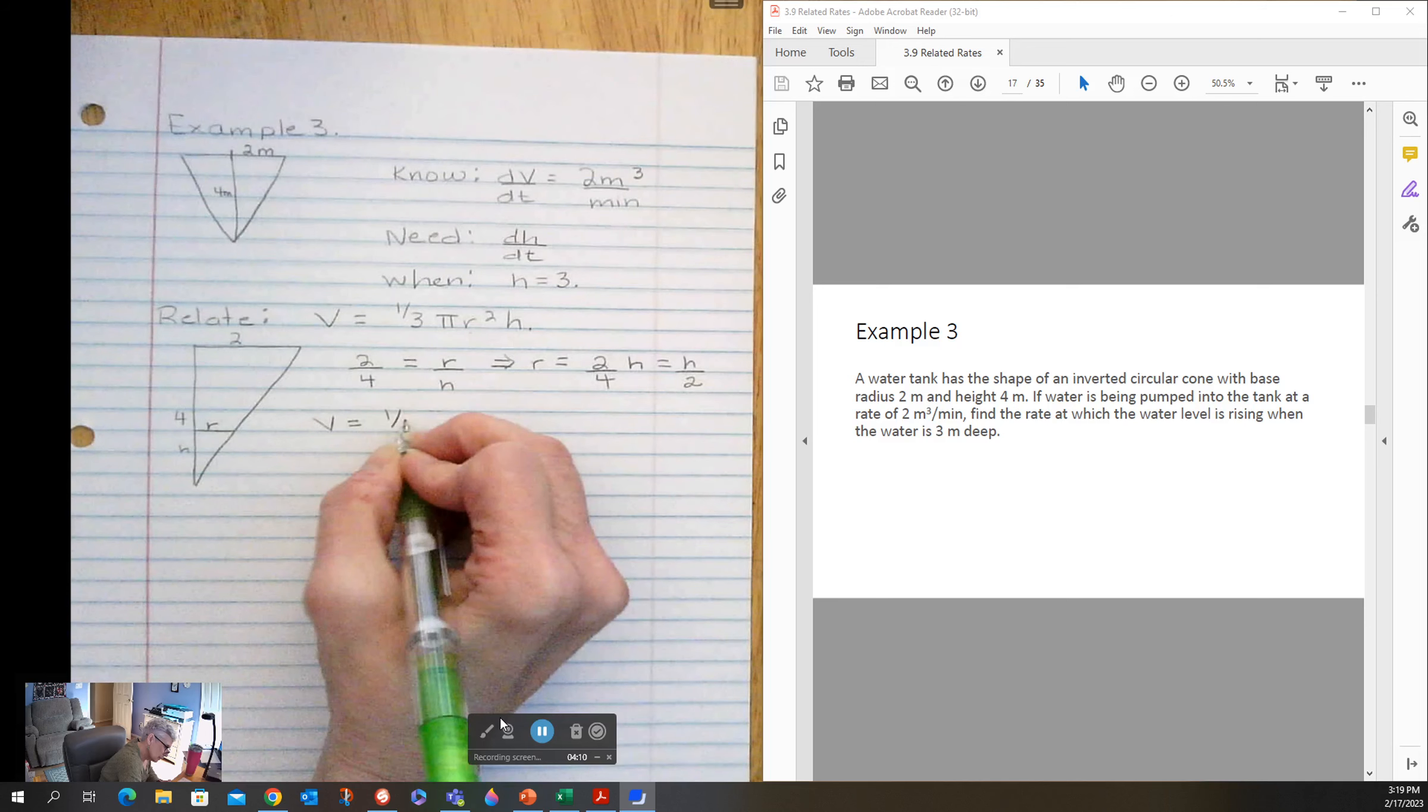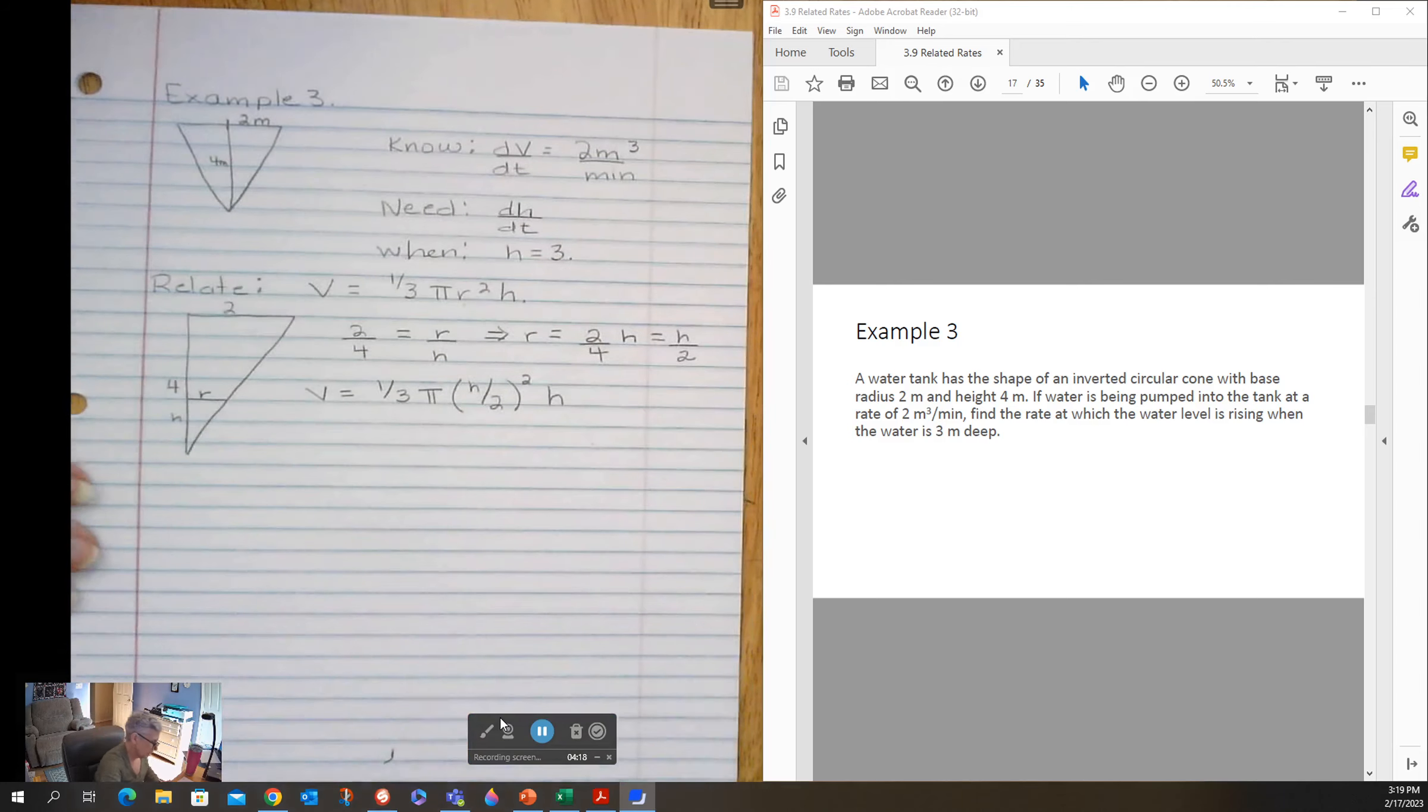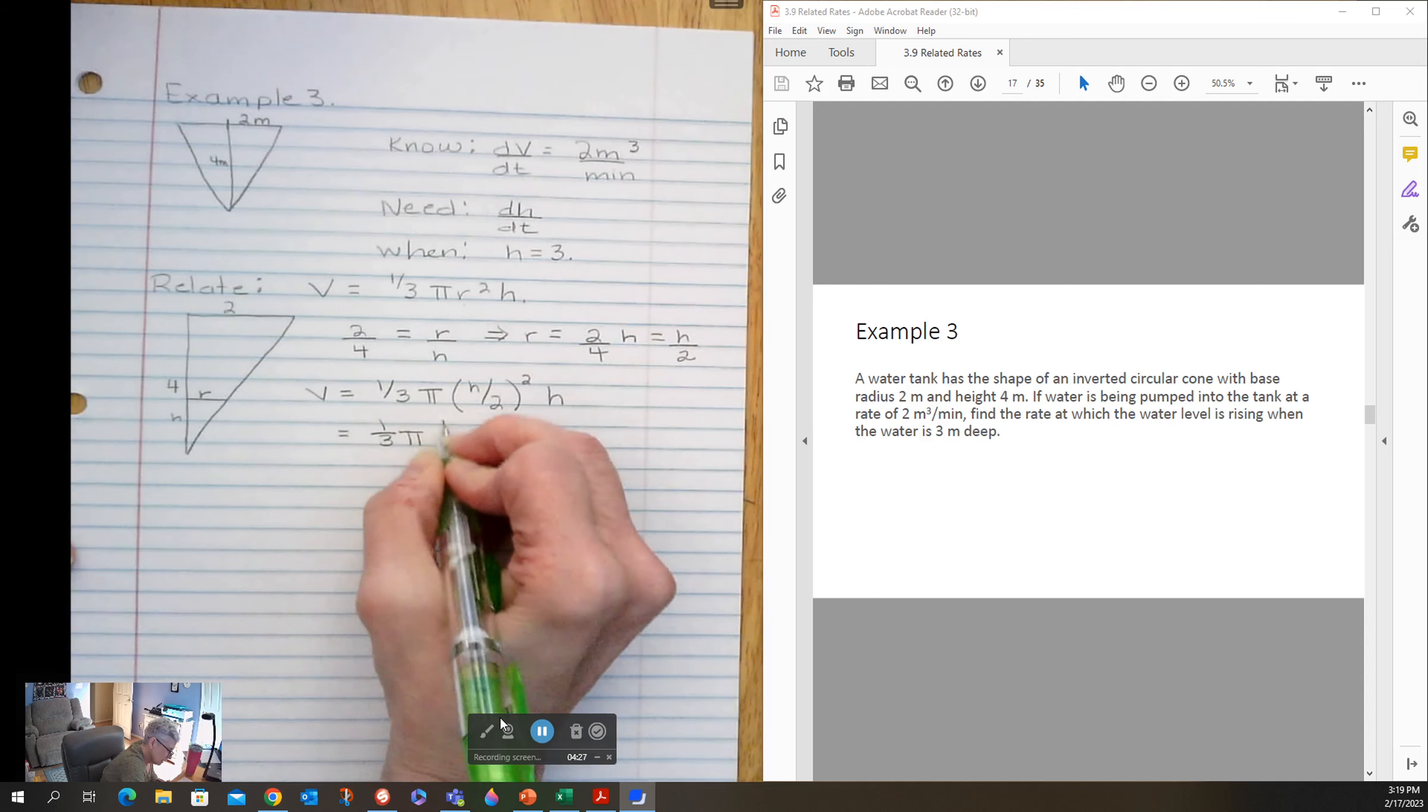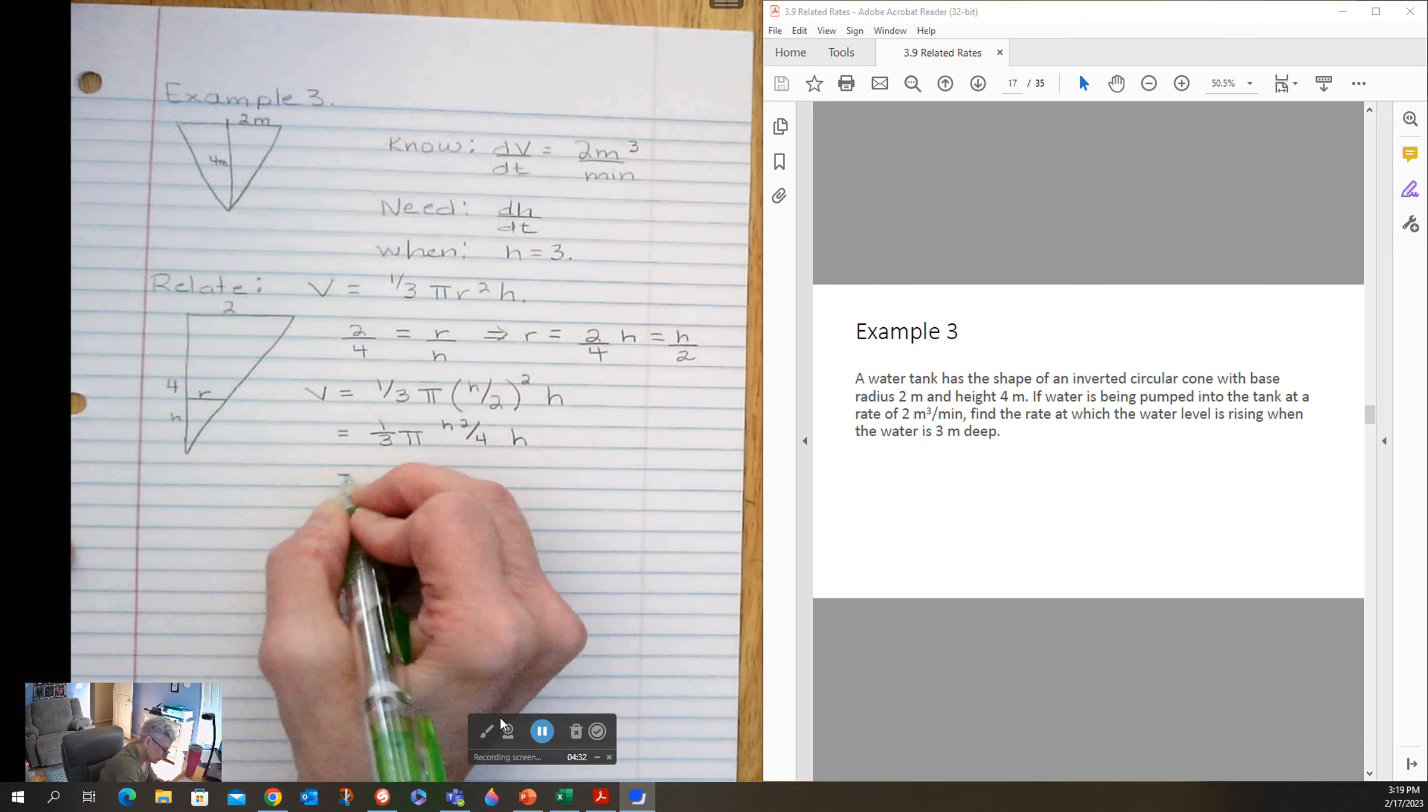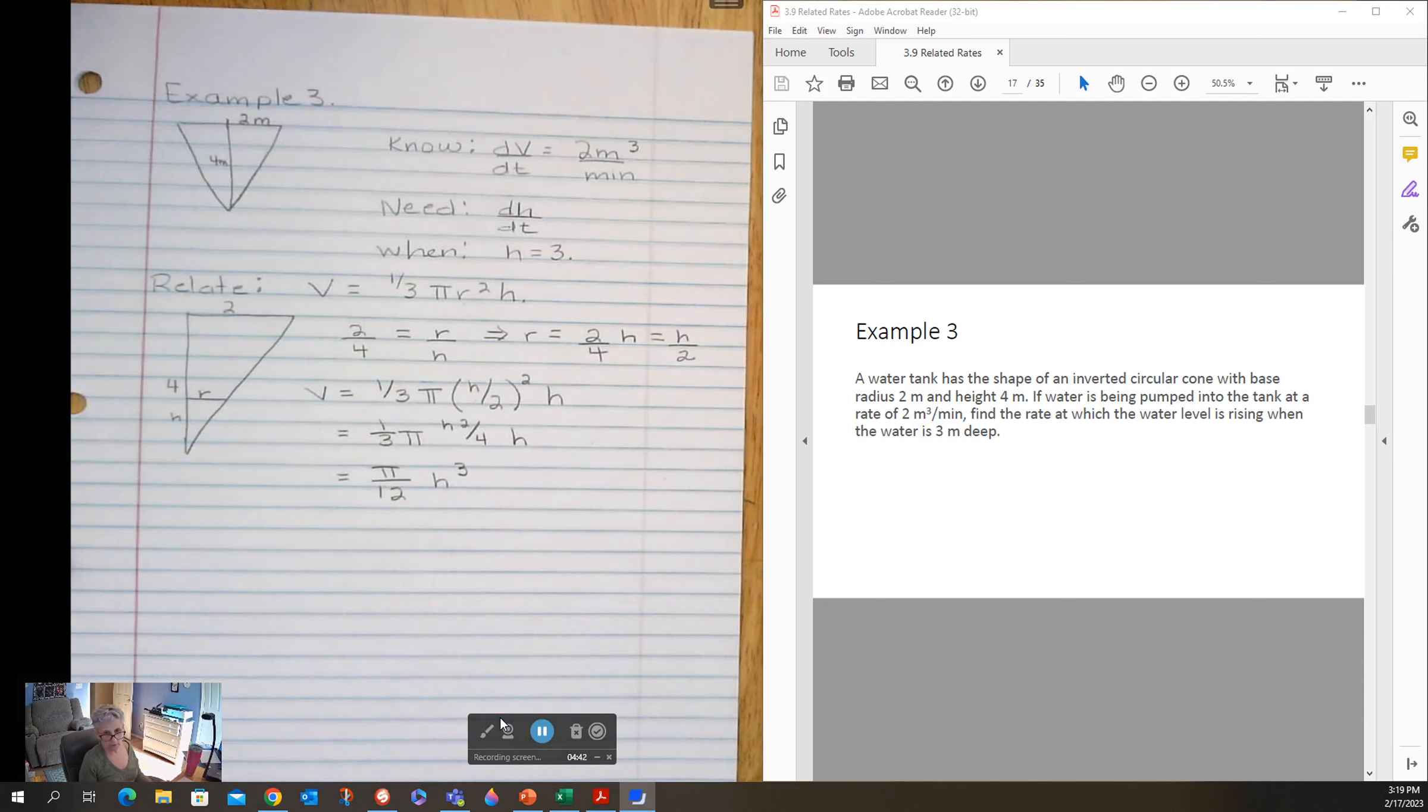One-third pi, h over two squared, times h. Now let's simplify stuff. I have one-third pi h squared over four times h, and I'm just going to stick pi on the top of the fraction bar and I'll put four times three down below, h cubed. Wow, that's so nice and simple now.